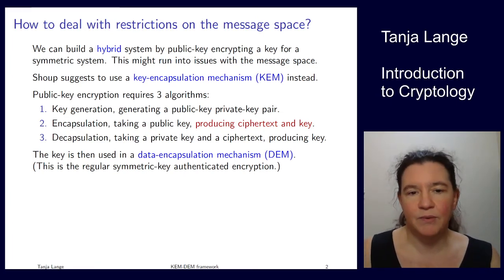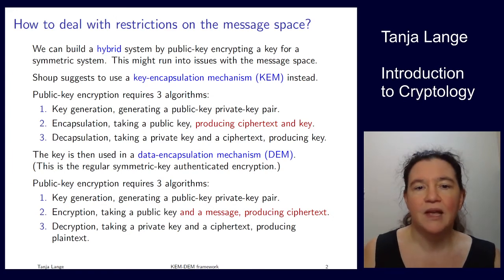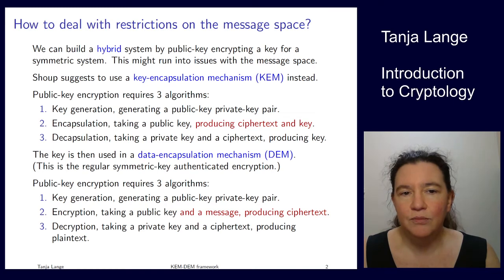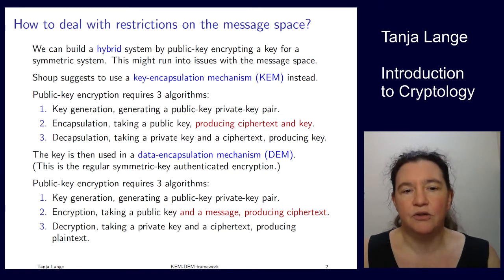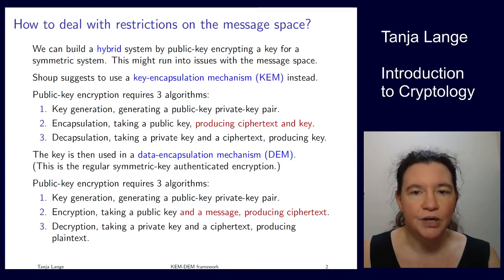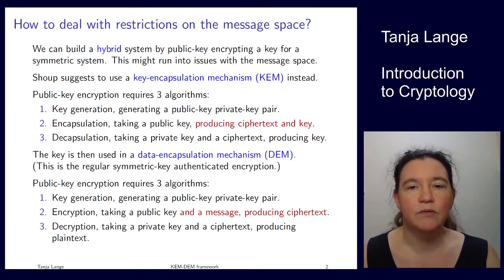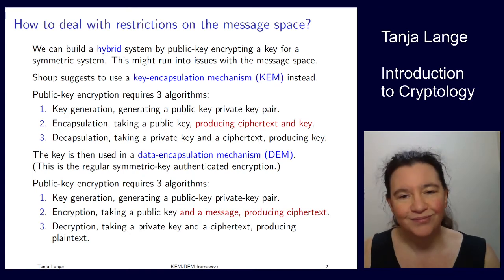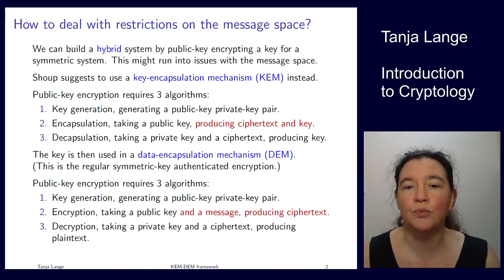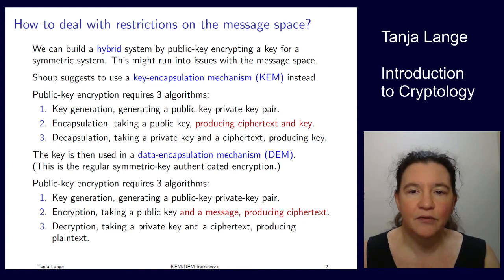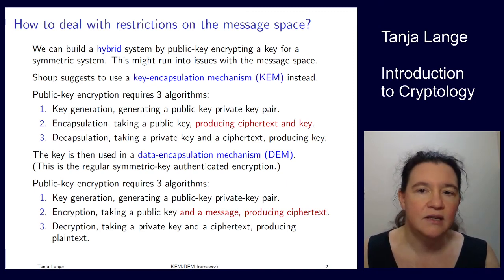There are three algorithms. The first is key generation, just the same as in public key encryption — you have a public key and private key pair. Then instead of encryption, we have encapsulation. Both take a public key, but in the encryption system you also take a message and produce a ciphertext. In the encapsulation part, you only take the public key with no further input. The algorithm internally makes random choices, and the output of a KEM encapsulation is both a ciphertext and a key — this key is used for the DEM part, i.e., symmetric key authenticated encryption.